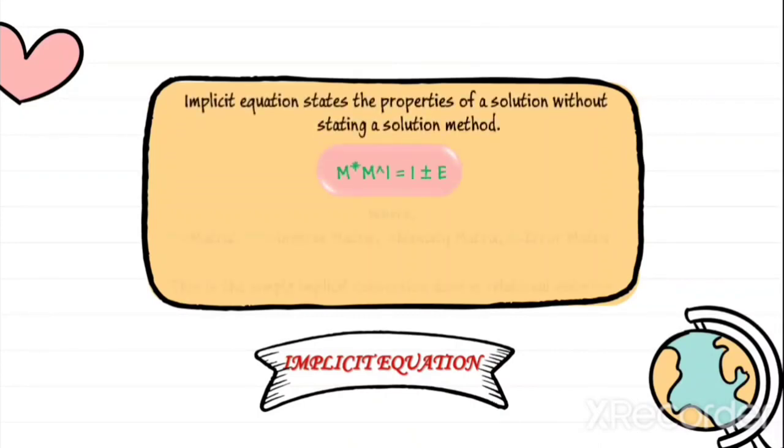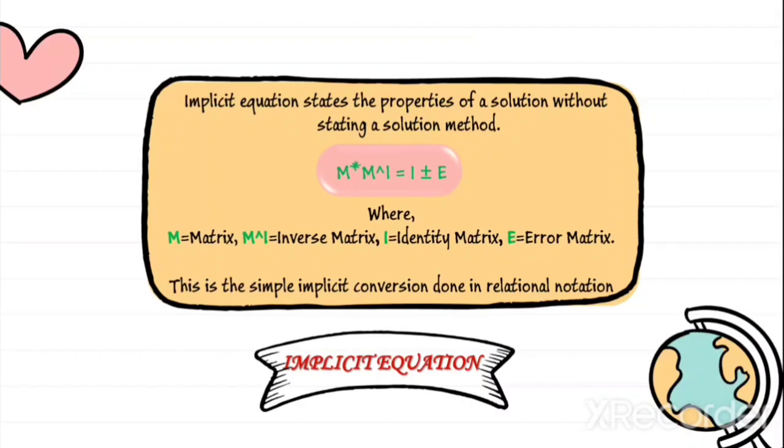First, implicit equation. Implicit equation states the property of a solution without stating a solution method. Here is the example: M times M to the power of negative one equals I plus or minus E. Here M states matrix, M to the power of negative one states inverse matrix, I states identity matrix, and E states error matrix.